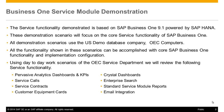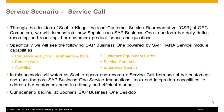We will also cover customer equipment cards. Through the desktop of Sophie Clog, the lead customer service representative at OEC Computers, we will see SAP Business One powered by SAP HANA service module capabilities including pervasive analytics and dashboards, customer equipment cards, service calls, service contracts, activities, and enterprise search. In this scenario, we will watch as Sophie opens and records a service call from a customer, using core SAP Business One service transactions, tools, and integration capabilities.